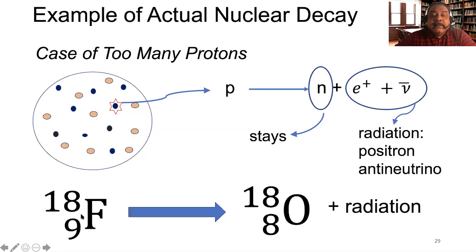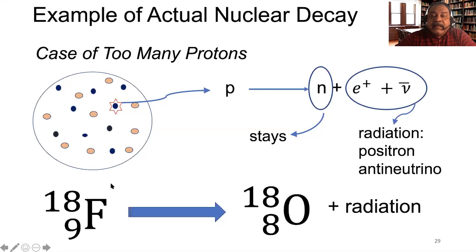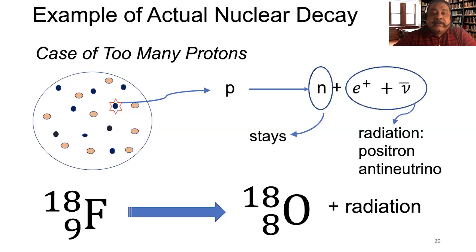That technique is called positron emission tomography, or PET scan. The reason why fluorine-18 is used is because it has a half-life of about 110 minutes — which is ideal for medical applications. If the nucleus decays too quickly, there isn't enough time to treat the patient. But if it decays too slowly, you don't want the patient waiting hours emitting radiation. So 110 minutes is a perfect half-life for medical applications.